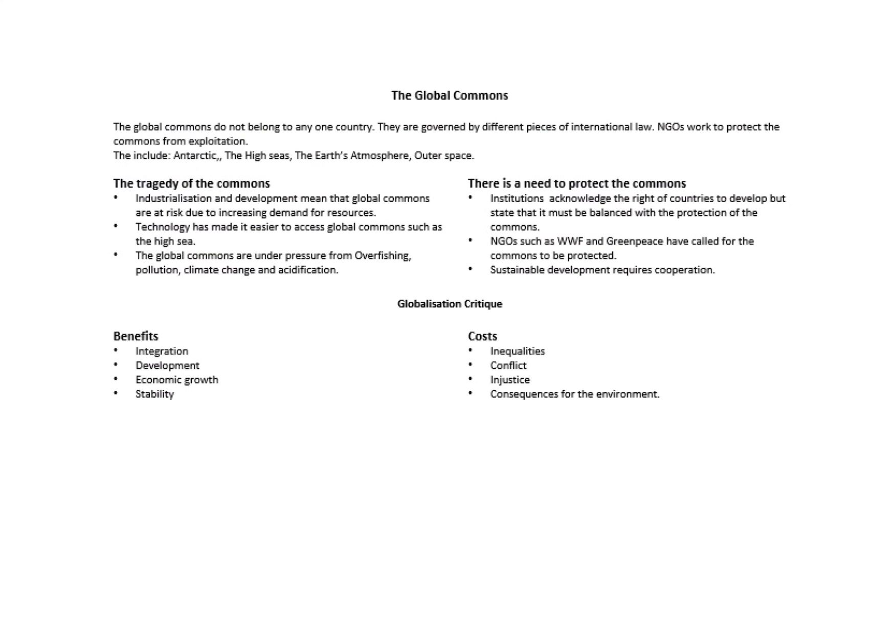Finally, the global commons is the last key thing to cover. Global commons do not belong to one country and are governed by different pieces of international law — Antarctica being the key example. Think about the tragedy of the commons: industrialisation and development have put the global commons at risk, and technology has made them easier to access, leaving them under pressure from overfishing, pollution, climate change, and acidification. We have a need to protect these commons. Big NGOs like WWF and Greenpeace have called for protection, and sustainable development requires cooperation. To sum up, benefits of global governance include integration, development, economic growth, and stability — but these come at a huge cost of inequalities in people, money, and finance, as well as conflict, injustice, and environmental risk.